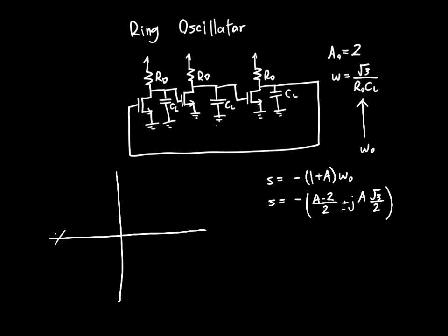So one's over here on the real axis, and we will just ignore that pole for the rest of this analysis. And the other two are at a real location of A minus 2 over 2. So if A equals 2, then this real part is 0, and this imaginary part is plus or minus root 3 times omega O. This is all multiplied by omega O. And this is the imaginary axis, and this is the real axis for our closed-loop poles.